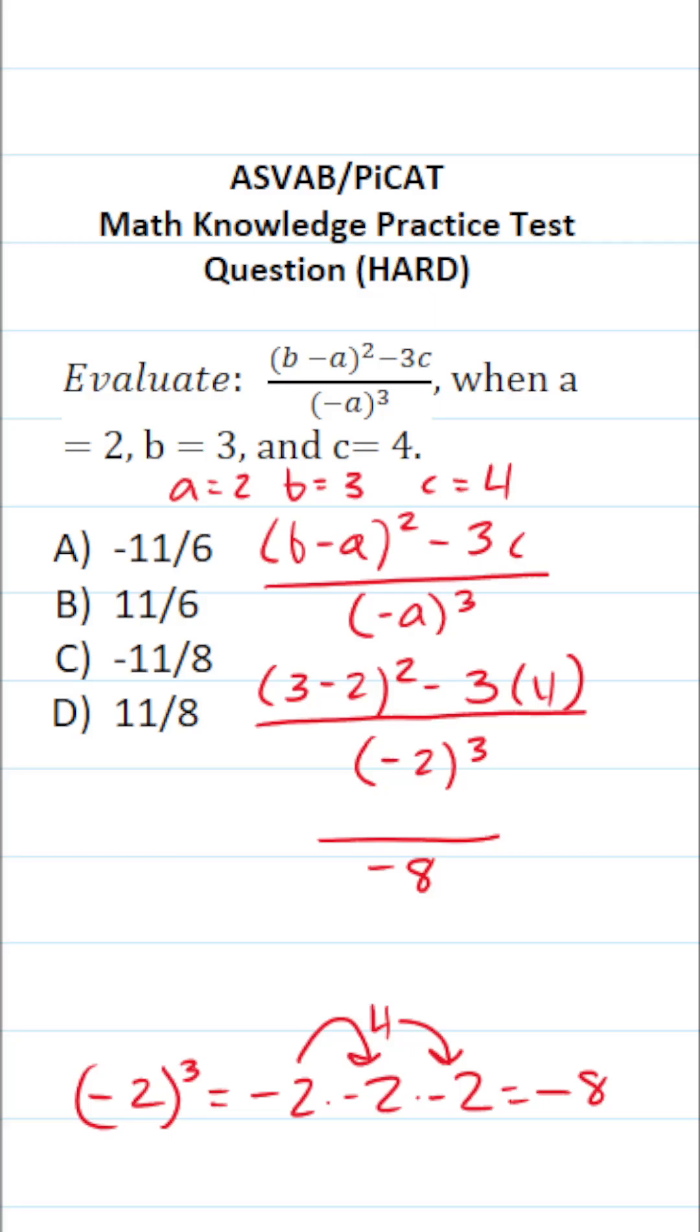Let's take care of 3 minus 2 squared. 3 minus 2 is 1. 1 squared is the same thing as 1 times 1, which is 1. And then we have minus 3 times 4. 3 times 4 is 12.